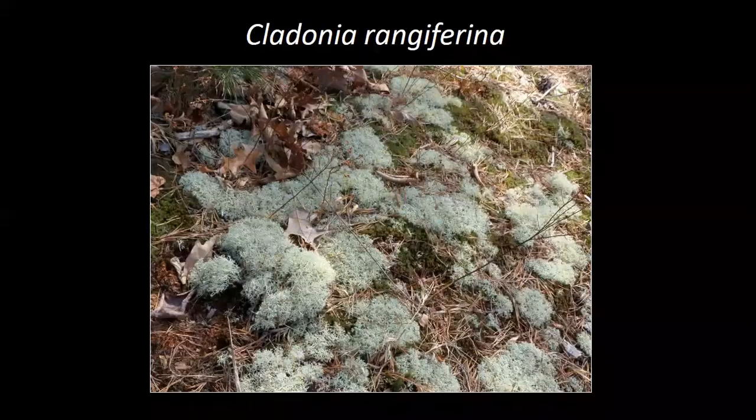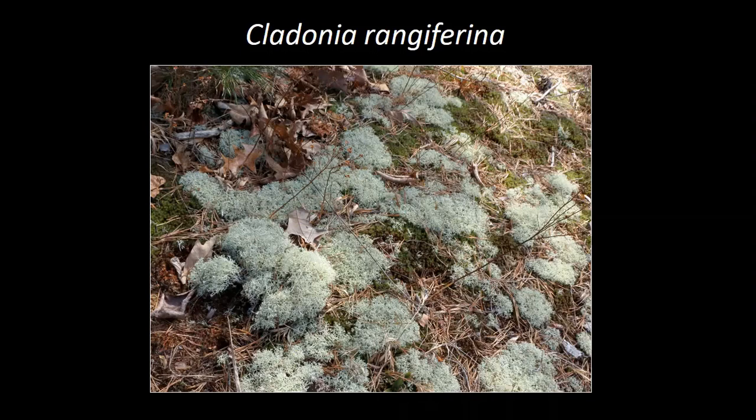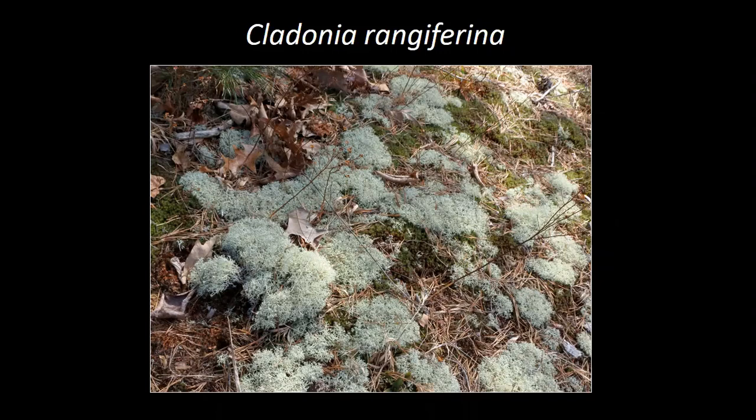Speaking of lichen — one of the coolest is reindeer moss, Cladonia rangiferina. Lichen is a composite species: it's made up of algae or cyanobacteria, and fungi. Algae and fungi together manifesting as a lichen — a hybrid of two completely different species existing together symbiotically and producing what you see as lichen. That is just fascinating.